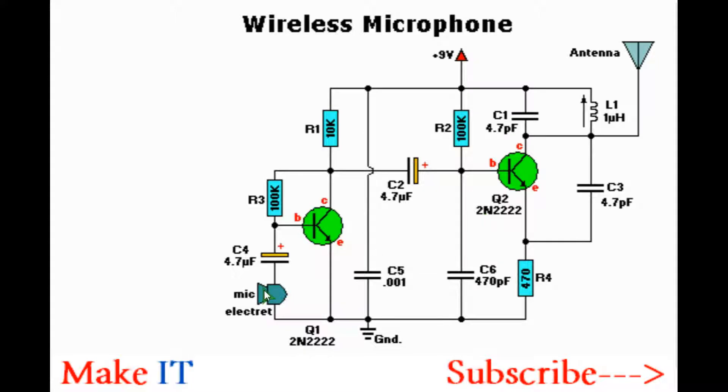We also need an electric microphone - basically it's a capacitive microphone. It's biased by the 10k ohms and 100k ohms resistors, which also bias the first transistor Q1.